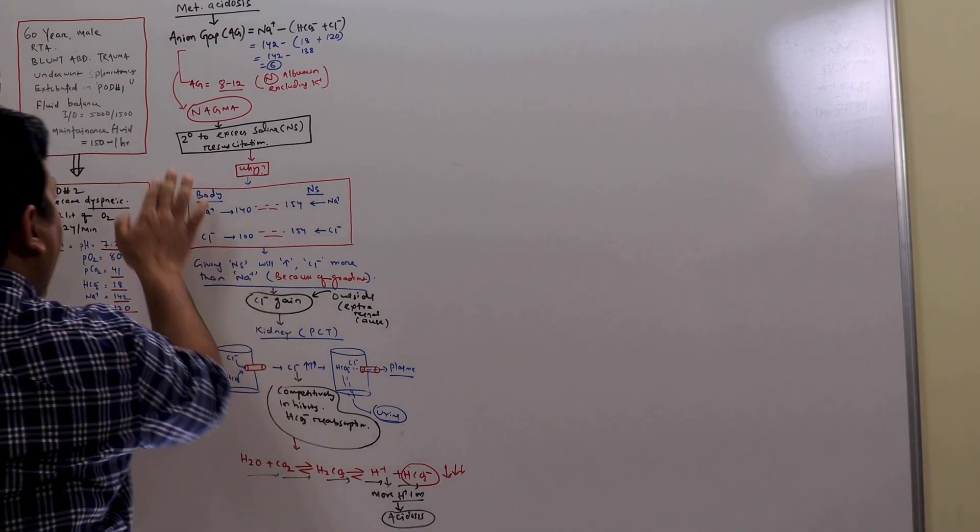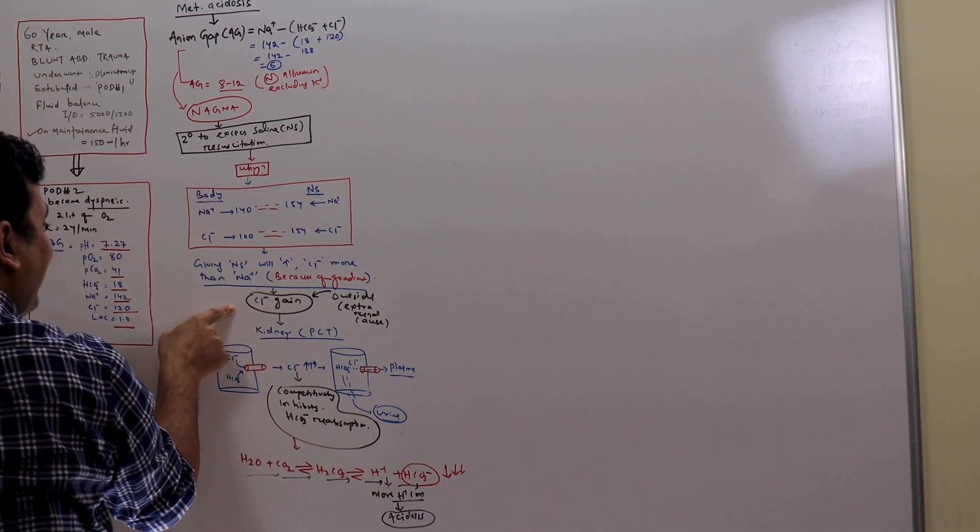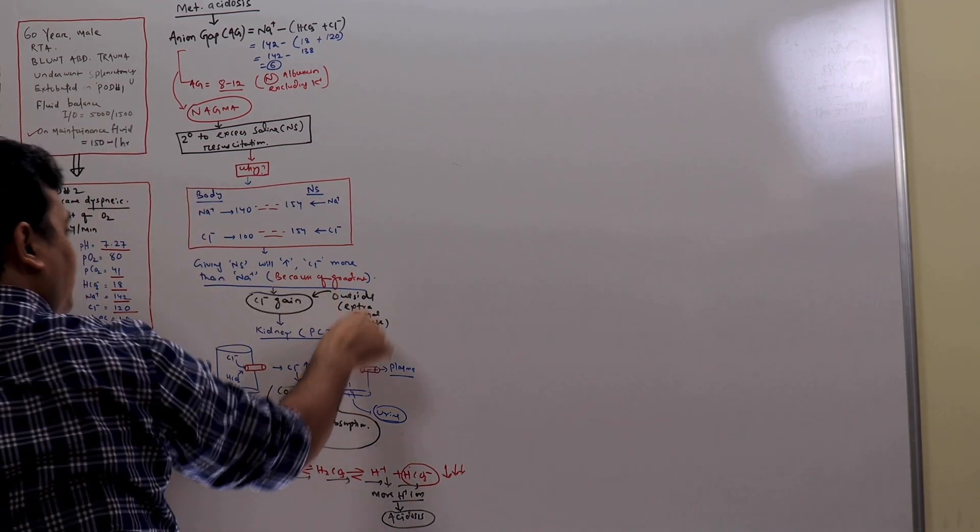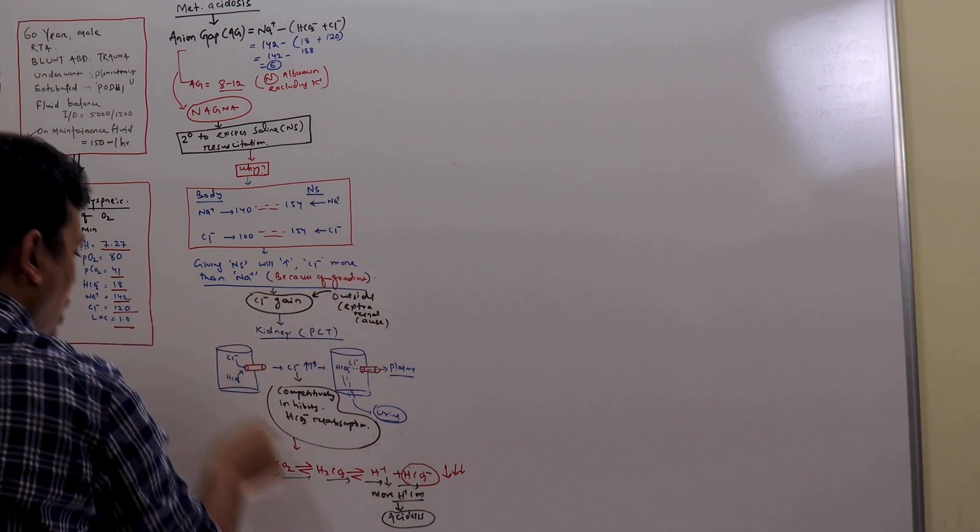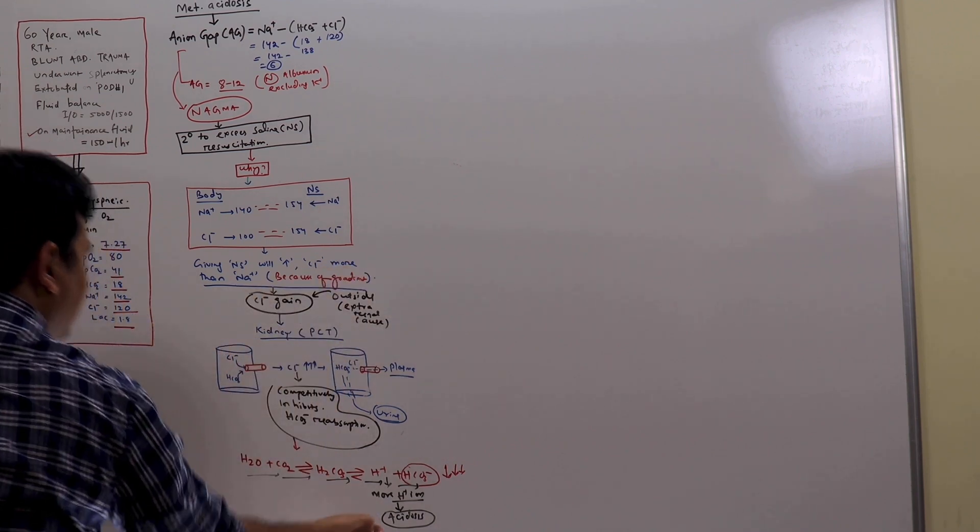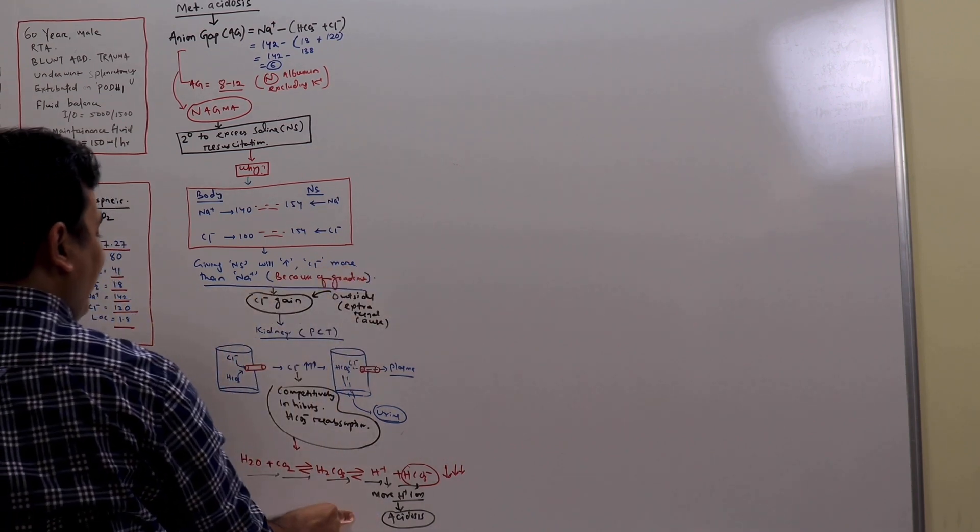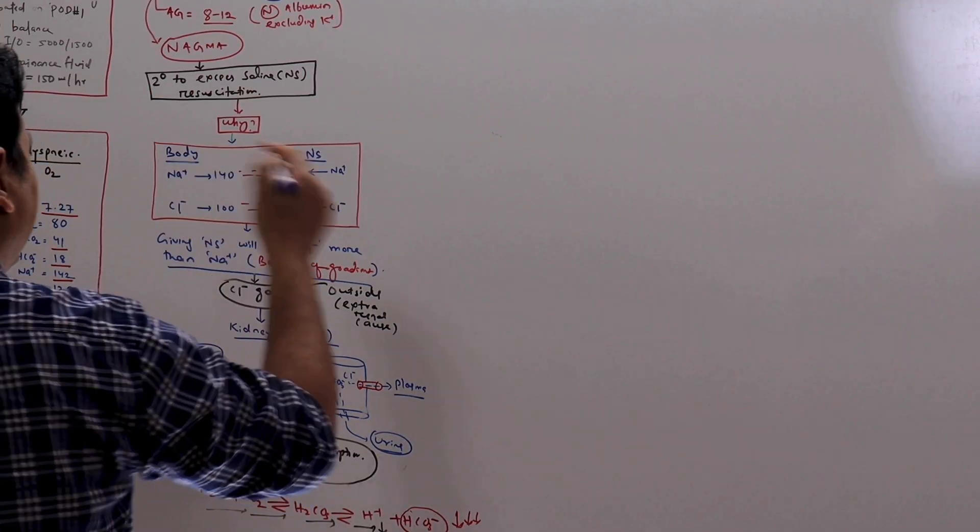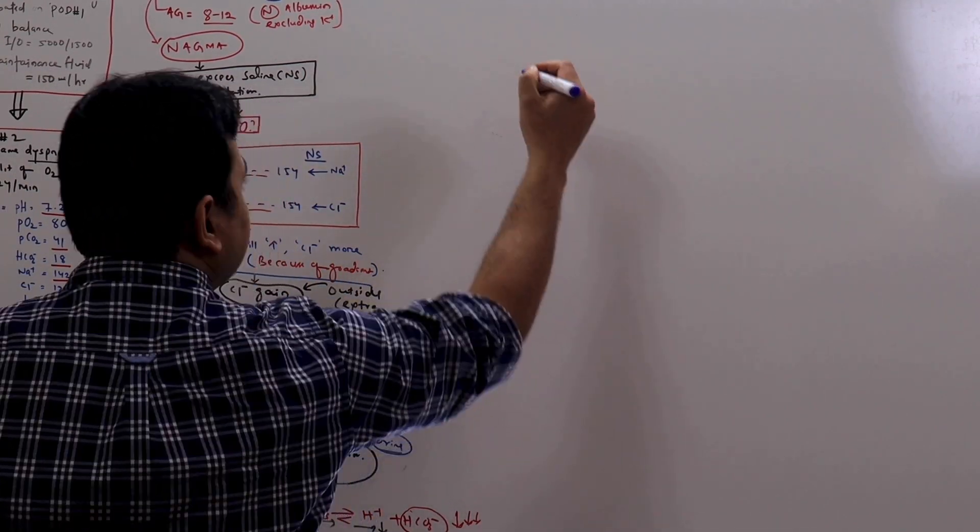This is how hyperchloremia, chloride gain, external cause from outside giving normal saline causes metabolic acidosis. This is called hyperchloremic metabolic acidosis. In this context, let us see another scenario.